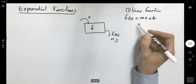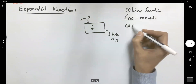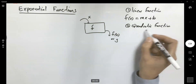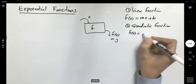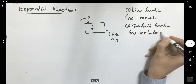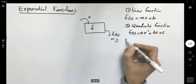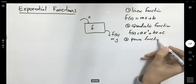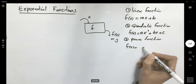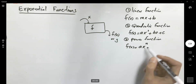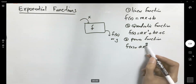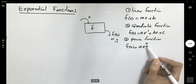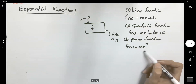We talked about linear functions. Then we introduced quadratic functions. A quadratic function is defined as f of x equals ax squared plus bx plus c. Then we defined power functions of the format f of x equals a times x to the n. You can plug in 3 for n to get a power function of degree 3, or 4 to get degree 4, and so on.